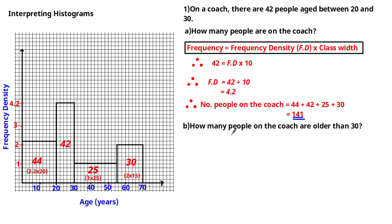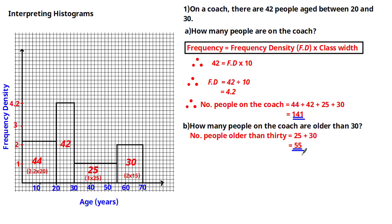The next question asks how many people on the coach are older than 30. Using the updated histogram, the number of people older than 30 is the total frequency in class intervals greater than 30. In this histogram that's the 30-to-70 range, so the answer is 25 + 30 = 55.